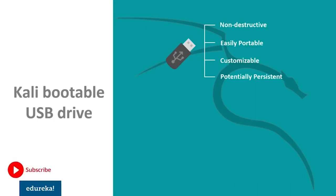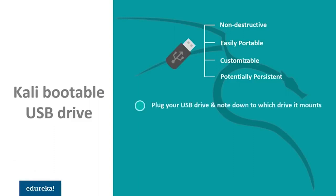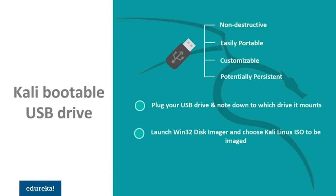Let's see how to create a bootable Kali USB drive on Windows. The process is very simple — it's just a three-step process. First of all, you need to plug your USB drive into an available USB port on your Windows PC. Next, you need to note down the destination drive letter it uses once it mounts. For example, it could be the F drive. After that, you will have to download and launch a software called Win32 Disk Imager.